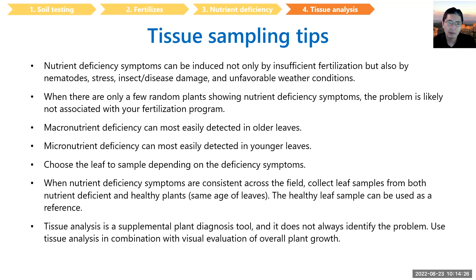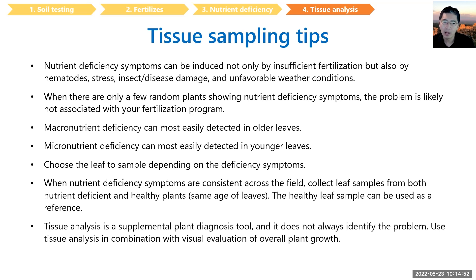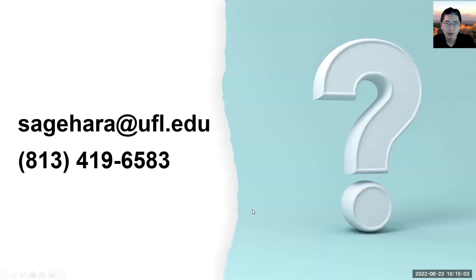The first step is always the soil test, starting with soil pH. Make sure that at pre-plant, you've applied a sufficient amount of fertilizer. Then you can conduct tissue analysis during the growing season to verify that your fertilization program is adequate, and consider additional fertilizer application if needed.